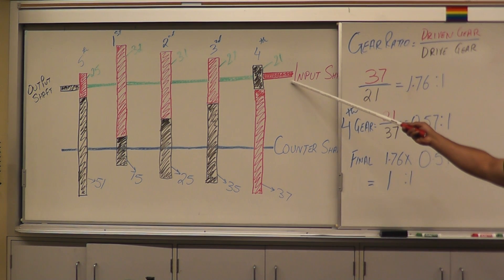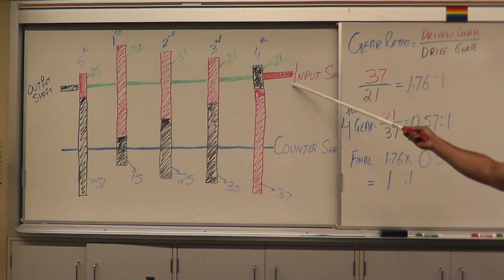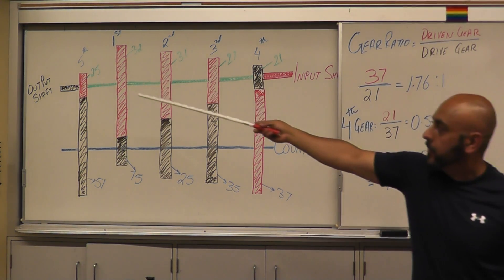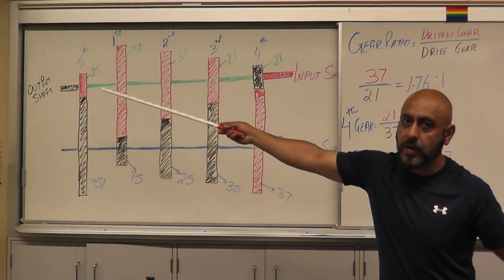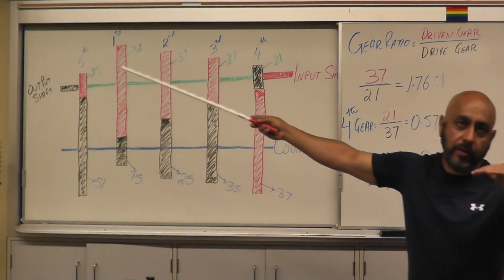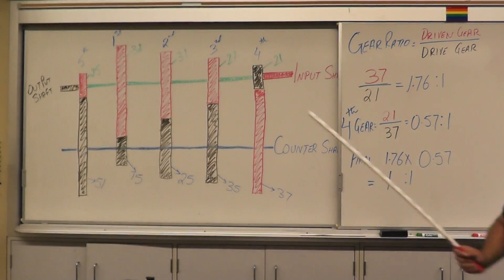That means if this is spinning at 1000 RPMs, the output shaft spins at 1000 RPMs.